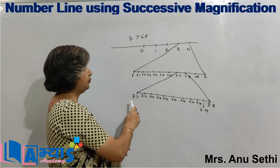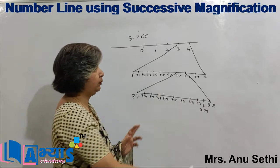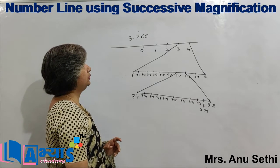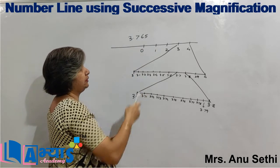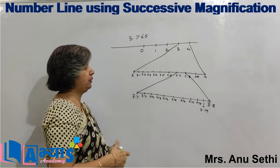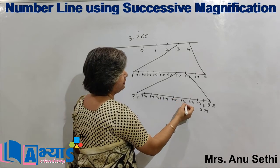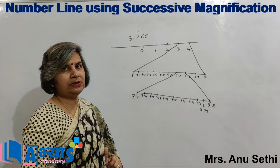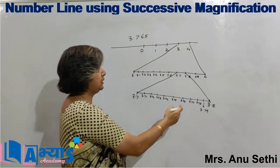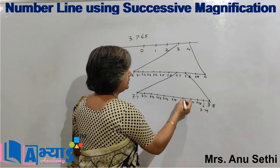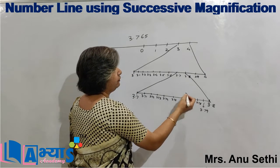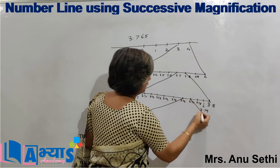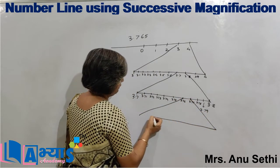I have divided 3.7 to 3.8 into 10 divisions. For the number 3.765, this number is greater than 3.76 but less than 3.77. So this is the area in which the number will lie, and I will magnify this area again.